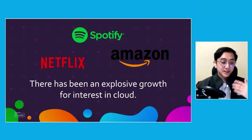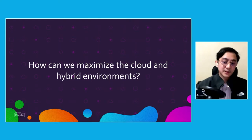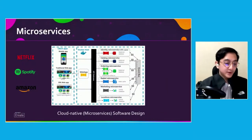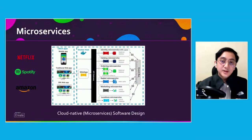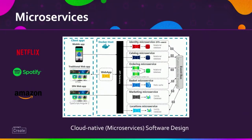To maximize cloud and hybrid environments, we introduce microservices. The whole application is decomposed into a small set of isolated microservices. Each service is self-contained and encapsulates its own code, its own data, and its own dependencies. Each will be deployed in something like a container and managed by a container orchestrator such as Kubernetes. Teams can easily create, understand, and add new features to these different microservices.